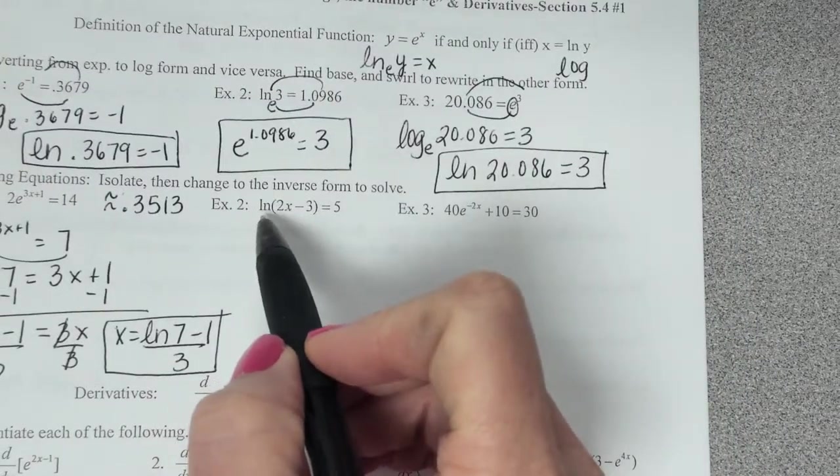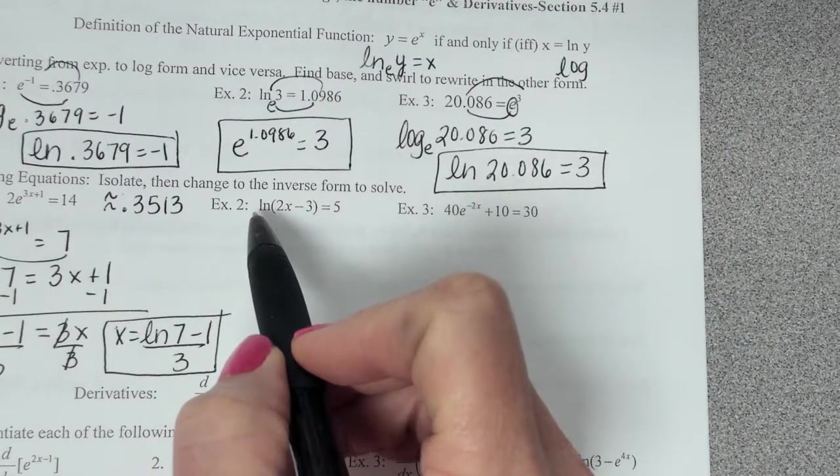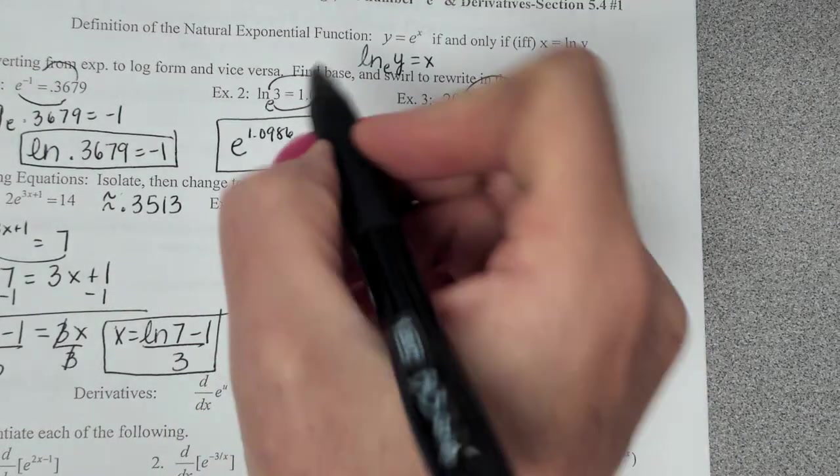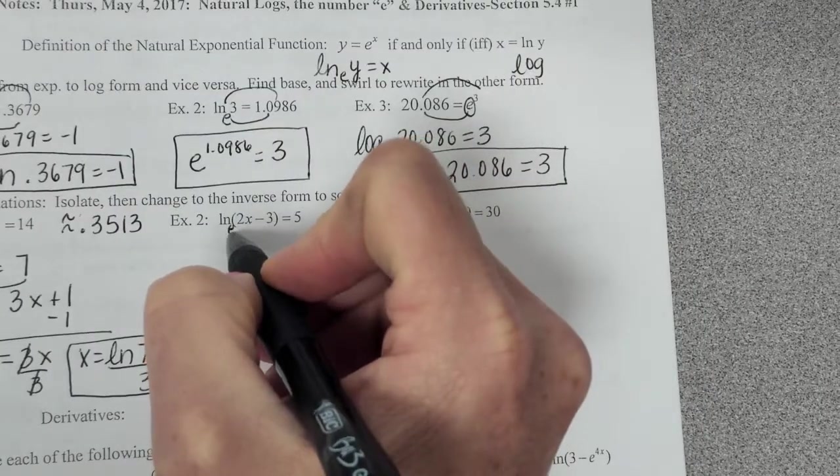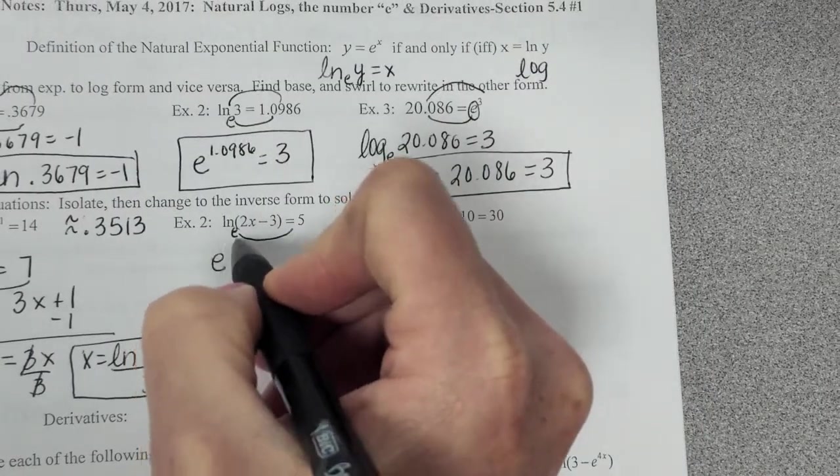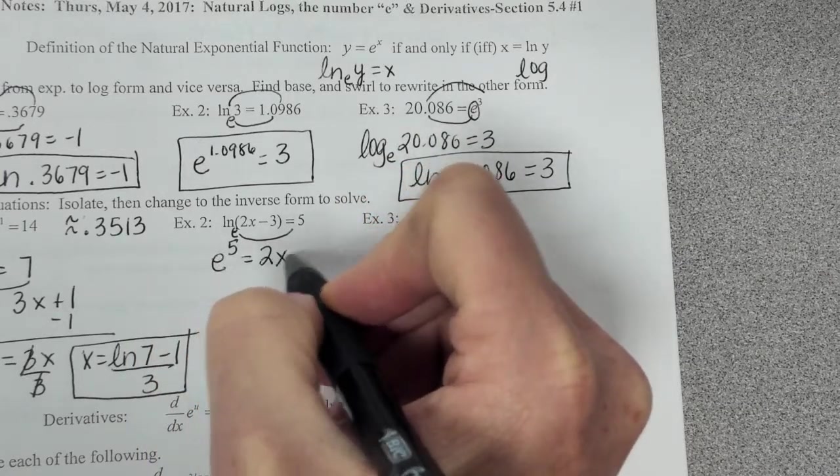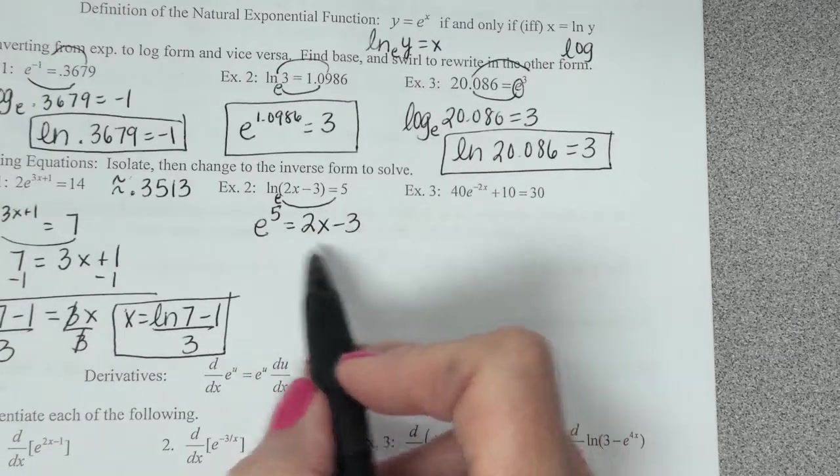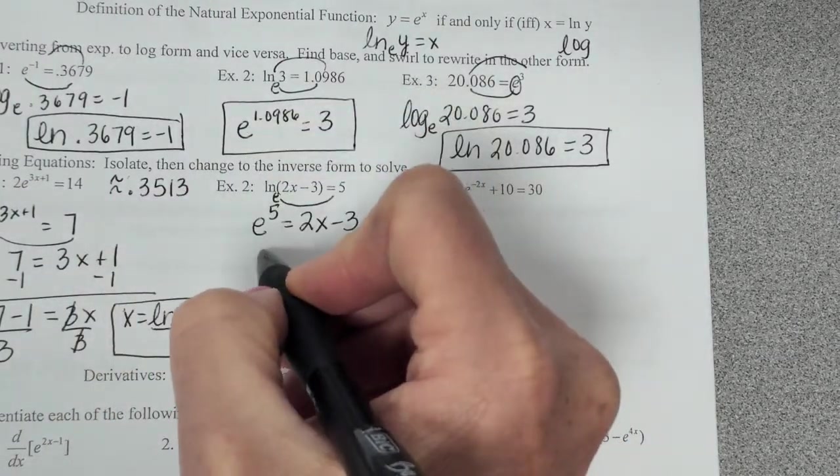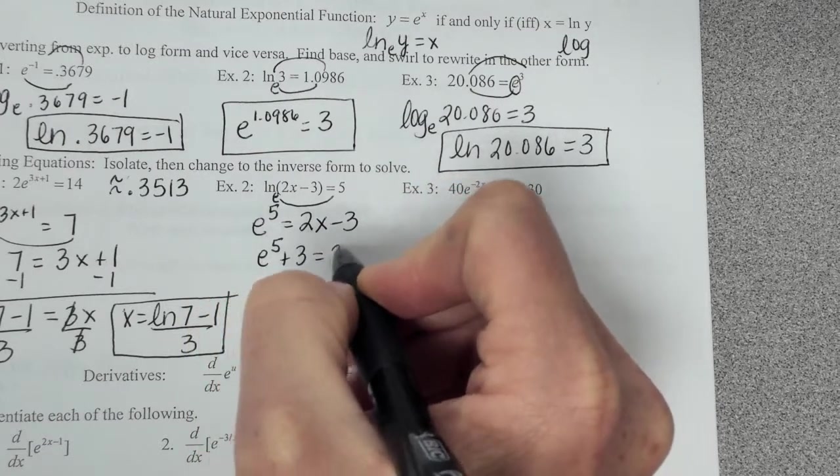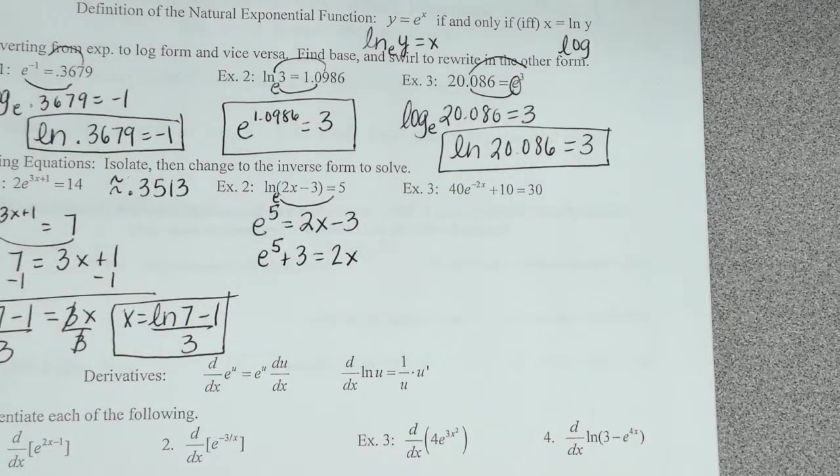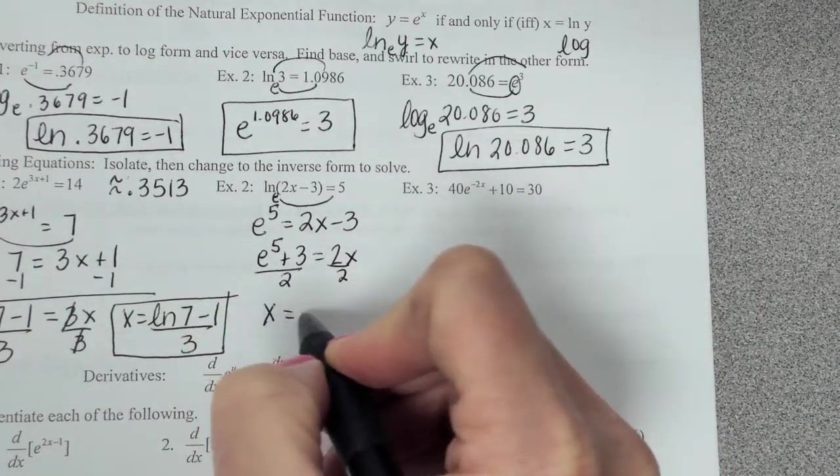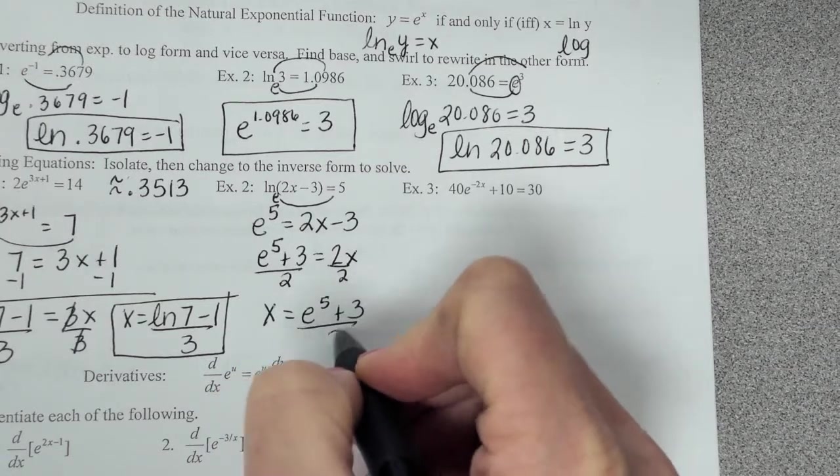All right. Example 2. We are given a natural log function. So what do we do to solve it? We have to use the inverse, which would be what? E. So I find my base of e, and I swirl it around. So it's going to be e to the 5th equals 2x minus 3. To solve it for x, I'm going to have to add 3. So I get e to the 5th plus 3 equals 2x. Divide by 2. And so x equals e to the 5th plus 3 over 2.